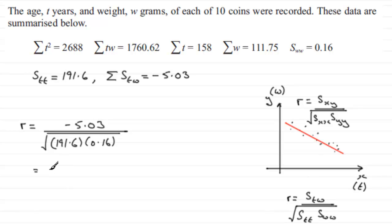But if you work this out, you find you get minus 0.90846 and so on. And we're told to give our answer to three significant figures. So it's going to be equal to minus 0.908 to 3SF.